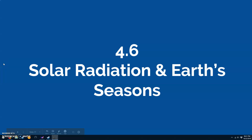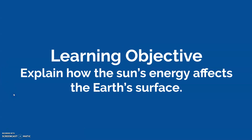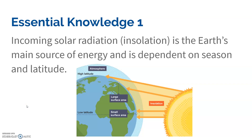In 4.6, we're going to talk about solar radiation and how it impacts the seasons. We want to be able to explain how the sun's energy affects the Earth's surface. For starters, the incoming solar radiation is called insolation — not to be confused with insulation in the walls. It's the Earth's main source of energy and is dependent on the season and the latitude.